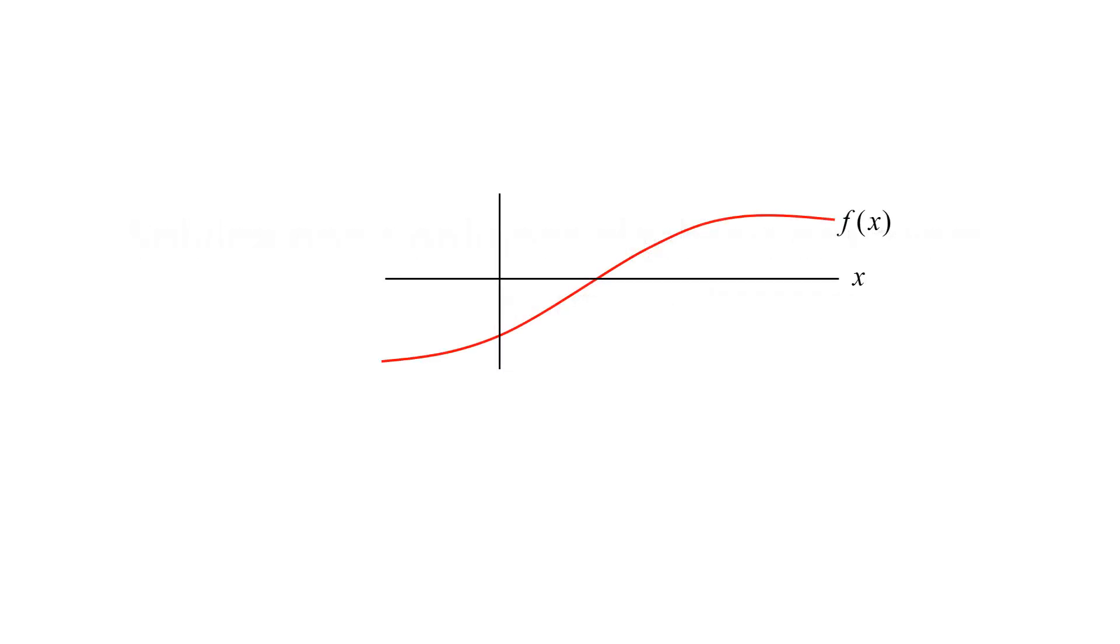Here we have a function f. If we use the Newton-Raphson method to find the root, we start with an estimate of the root, xi, and calculate the function and its first derivative at that value. We follow the slope of the line, which is tangent to the curve, until we reach the x-axis, giving us a new estimate of the root, xi plus 1.